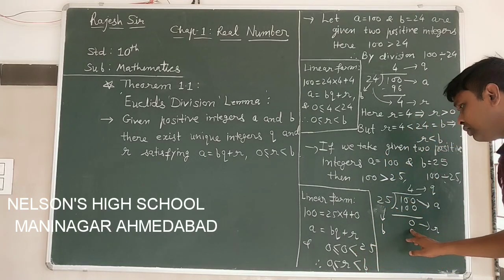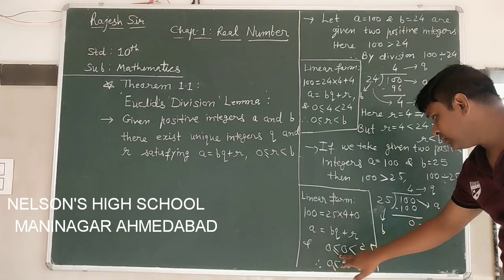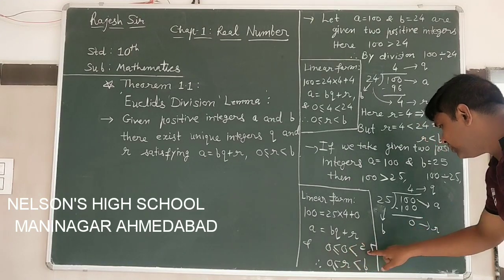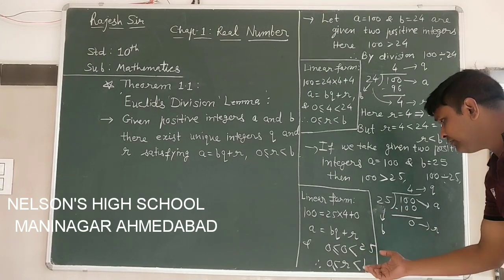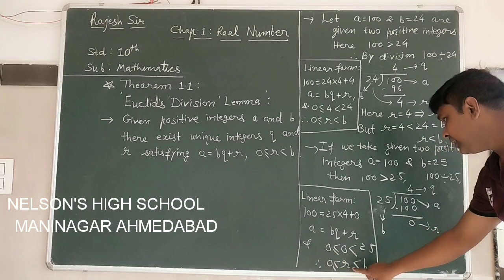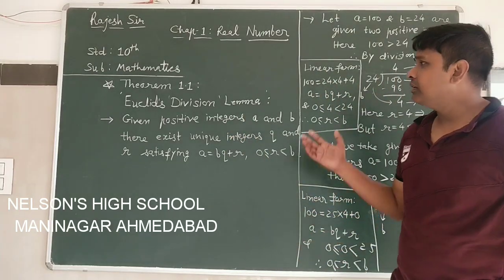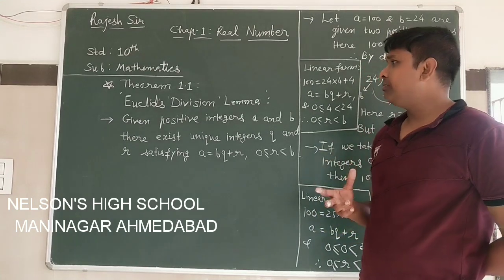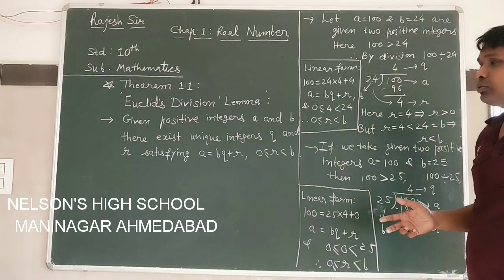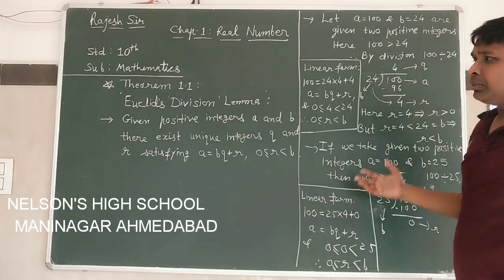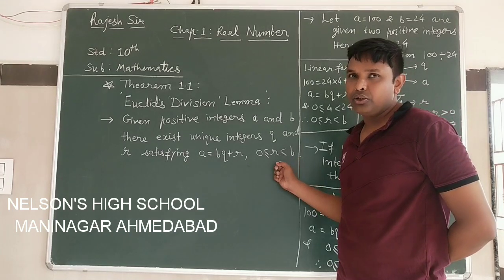So we understand that r may be 0 also, but r is always less than b. This is why the less-than-or-equal-to sign comes in: 0 is less than or equal to r. In this case, 0 is equal to 0, but 0 is less than 25. So the condition is: 0 less than or equal to r and r less than b equals 25. This is a very easy first concept in the chapter. Always, you have to find this form by simple division. In examples and exercises, by simple division you will get this form, and you will also verify the condition r less than b.